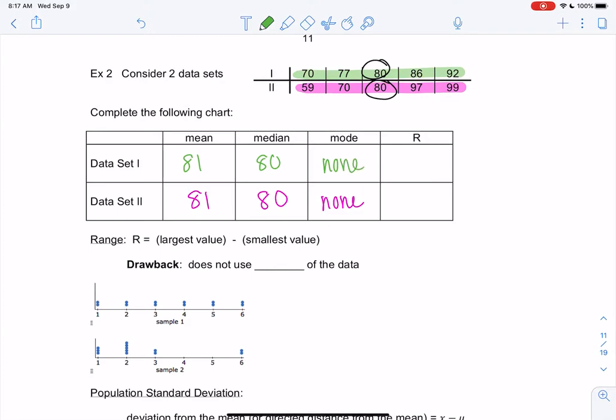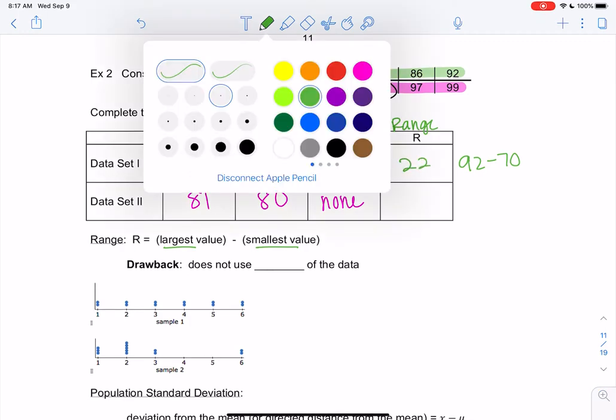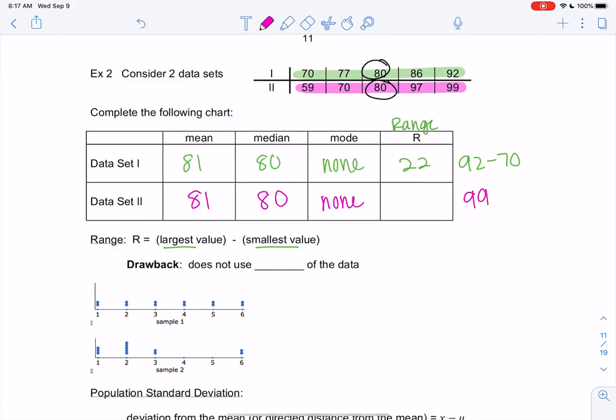And then range is what's new. So range, R is for range. That's just the largest value minus the smallest value. So for set one, it would be 92 minus 70, which is 22. And then for set two, it would be 99 minus 59, which is 40. So finally, something's different. When we only look at mean and median, these data sets look the same, and they're clearly not the same.